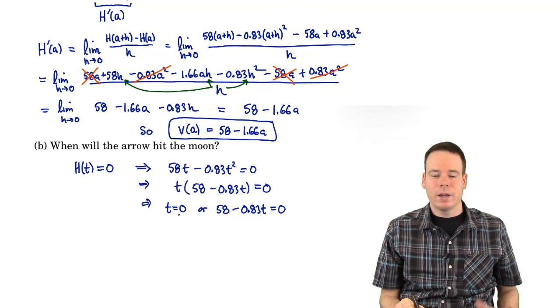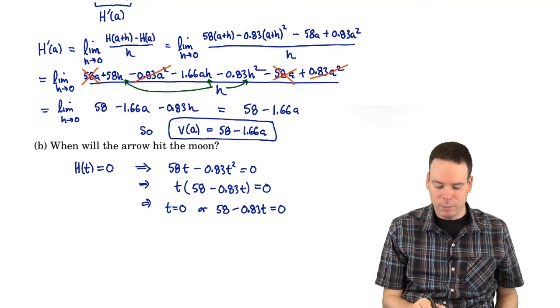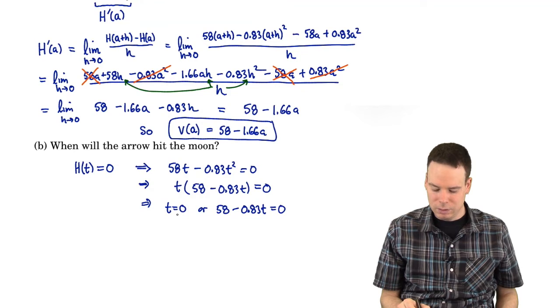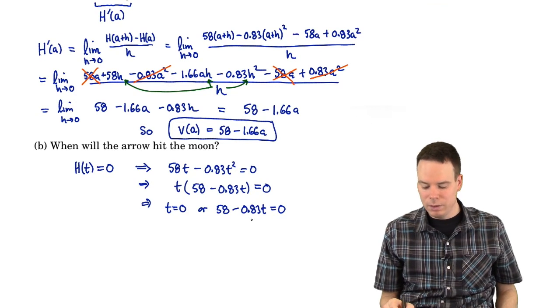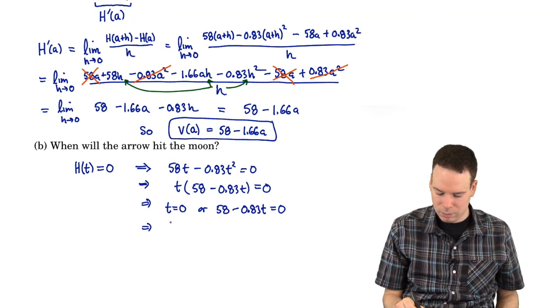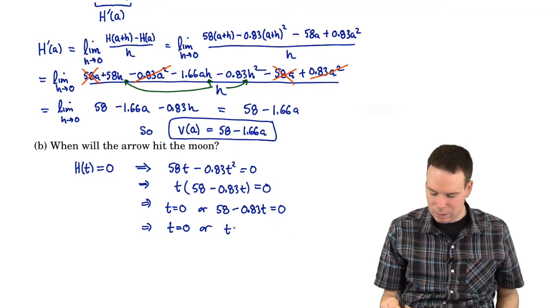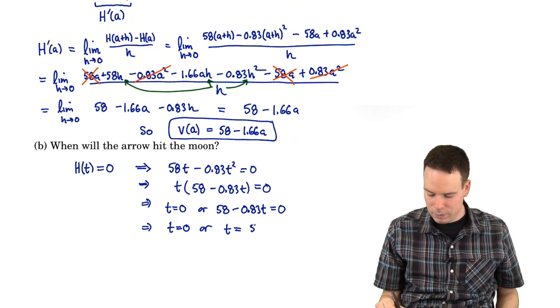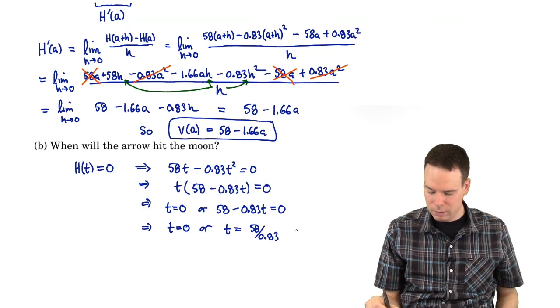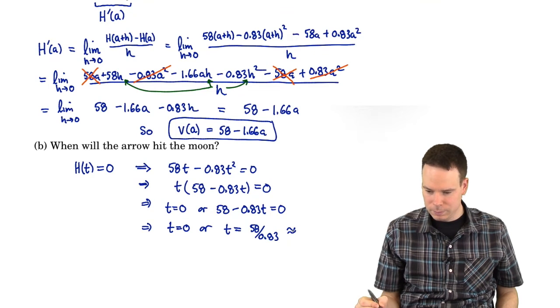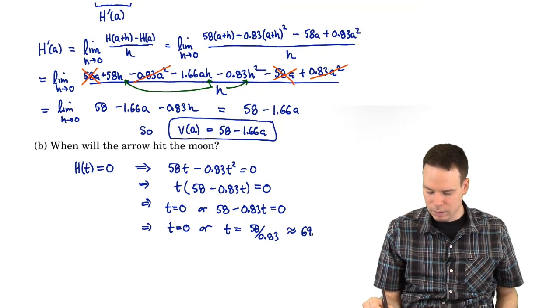And so this product is 0 when precisely one of the factors is 0. So that's either when t is 0 or when 58 minus 0.83t is 0. When t is 0, well that's when it was launched. So it was launched from height 0. So we expect to get that as an answer. When it's going to hit again is this other solution when t is non-zero.